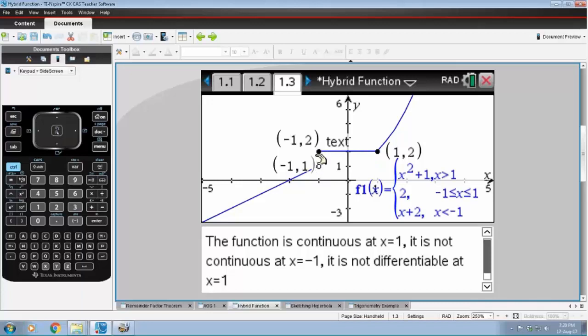the graph does not join up. So what that means is that the graph is continuous at x equals one because it joins up, but it's not continuous at x equals minus one because the graph does not join up.